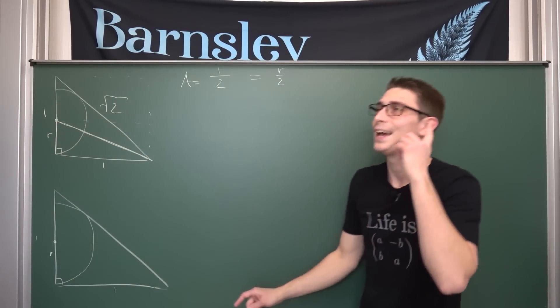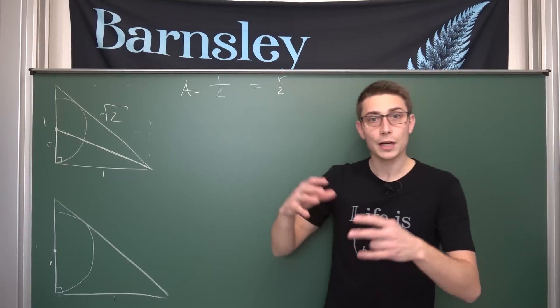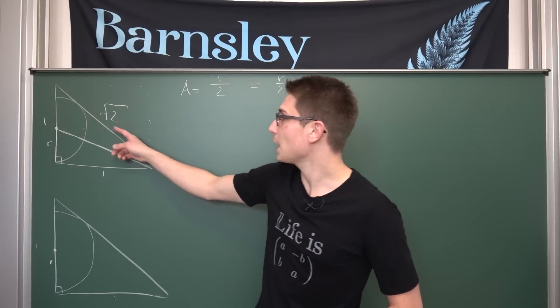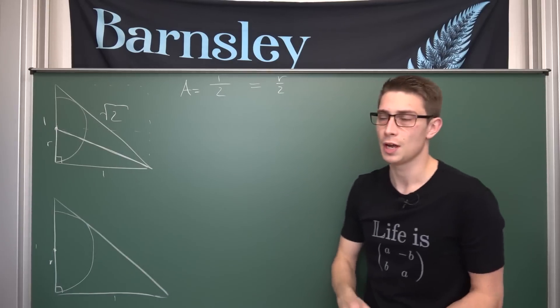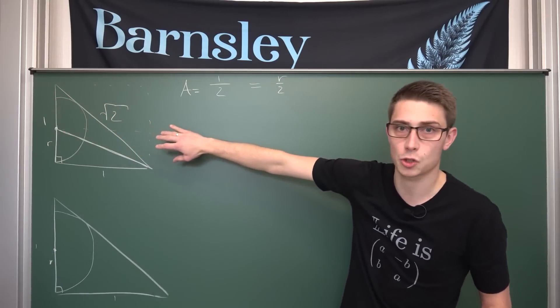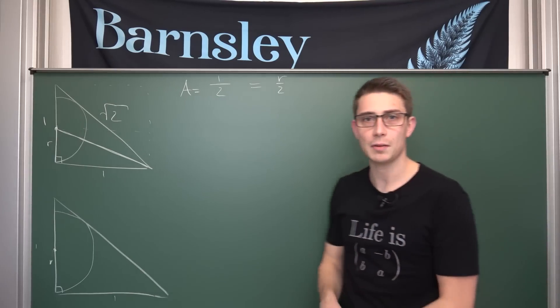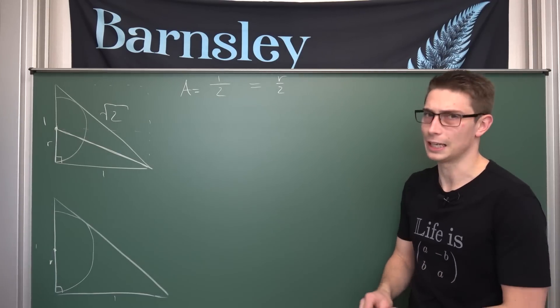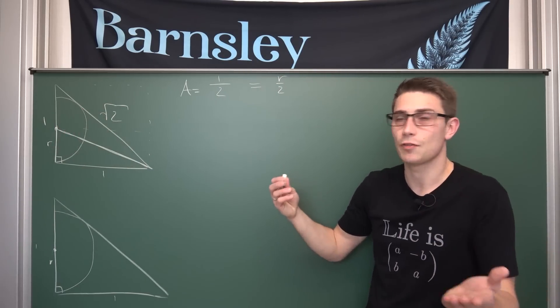So we are going to copy this triangle, put it here, and then we are going to end up with a rectangle. 1 times r is going to be the area of the rectangle, meaning half the area of this thing, namely r over 2, is hence going to be the area of this triangle. So we are done with the first area. Now what about the area of the second one? This sadly is not a right triangle at the moment, but we can make use of the height property.